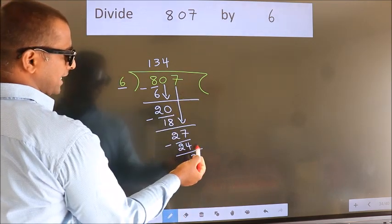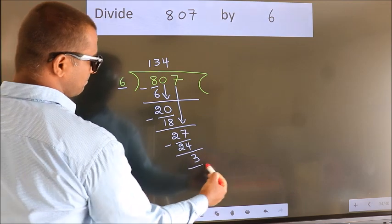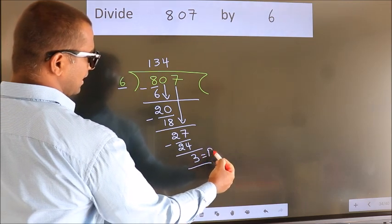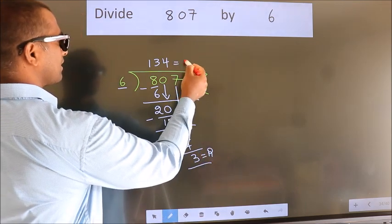No more numbers to bring down. So we stop here. This is our remainder. This is our quotient.